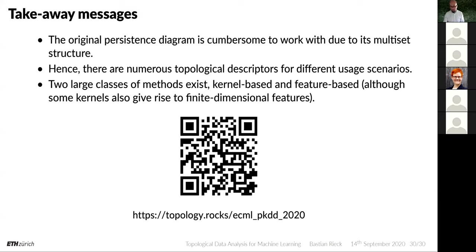A second question from someone whose app crashed: they want to verify whether the persistence diagram depends on the choice of filtration — and once a filtration is chosen, whether the persistence diagram has no path dependency, even when two simplices with the same score need to be added in some order.